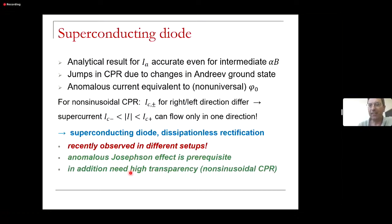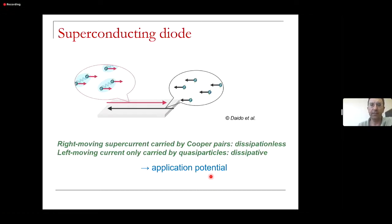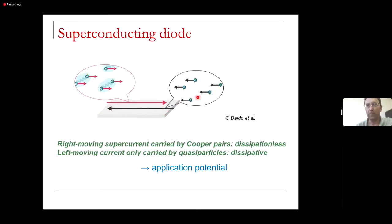If the critical current for one direction is smaller, there is a window of currents where supercurrent can only flow in one direction — that is the superconducting diode: a dissipationless rectifier where a supercurrent flows in one direction but only a dissipative current flows in the other. This has been observed in different setups, and the anomalous Josephson effect is a necessary but not sufficient ingredient. You also need high transparency and a non-sinusoidal current-phase relation. This phenomenon has evident great application potential.